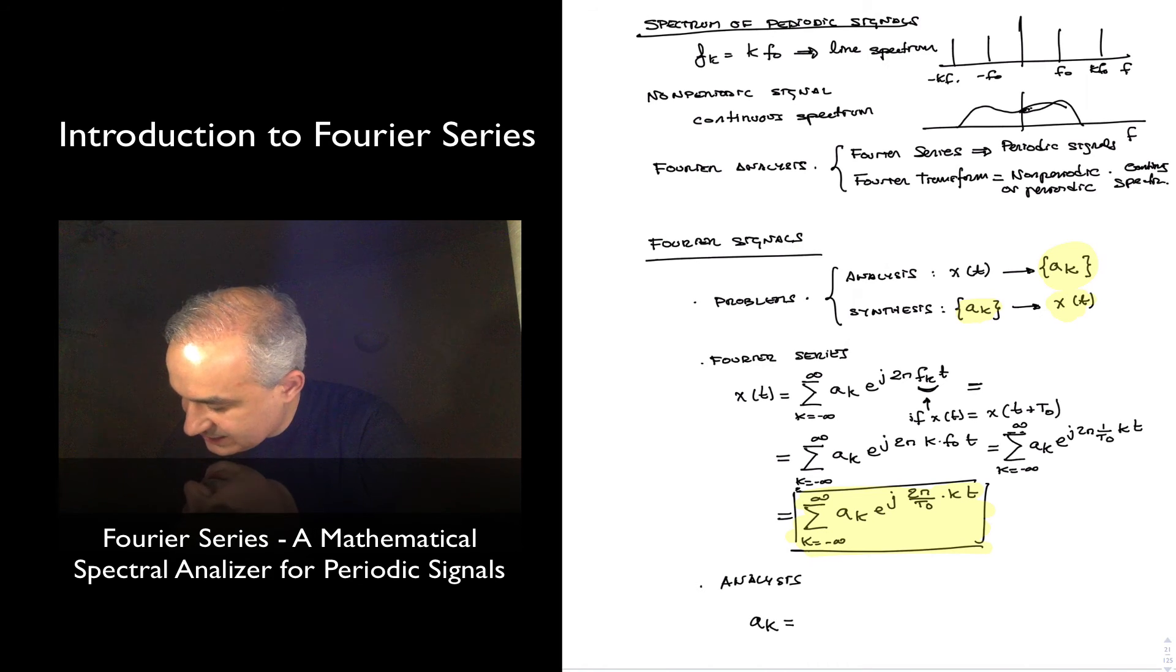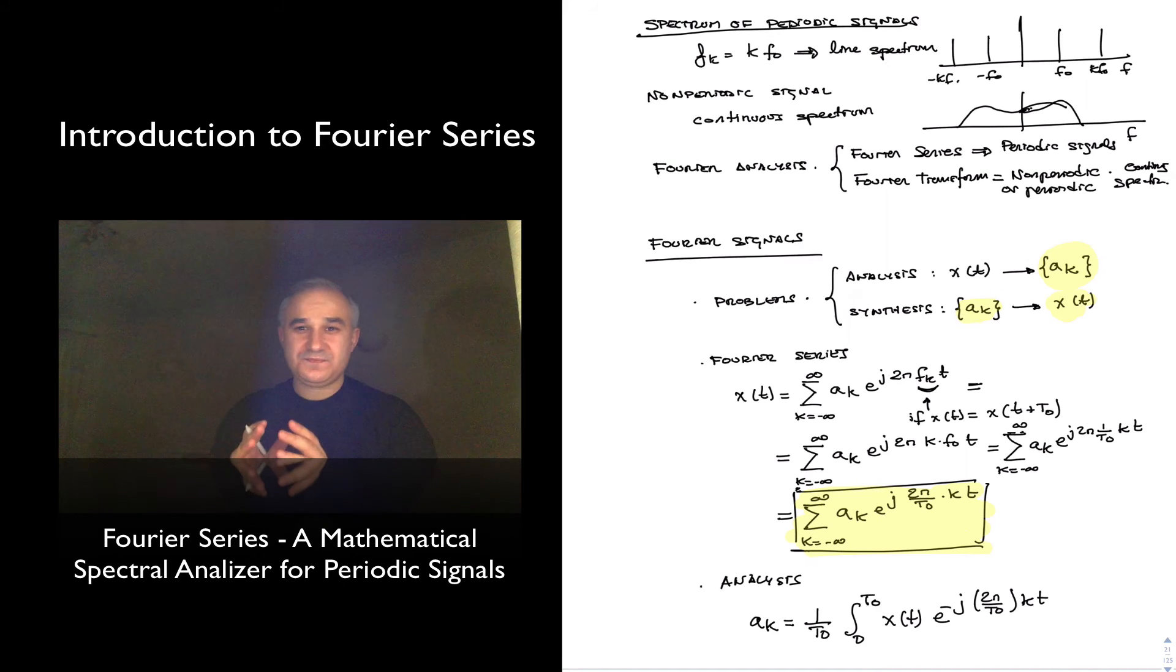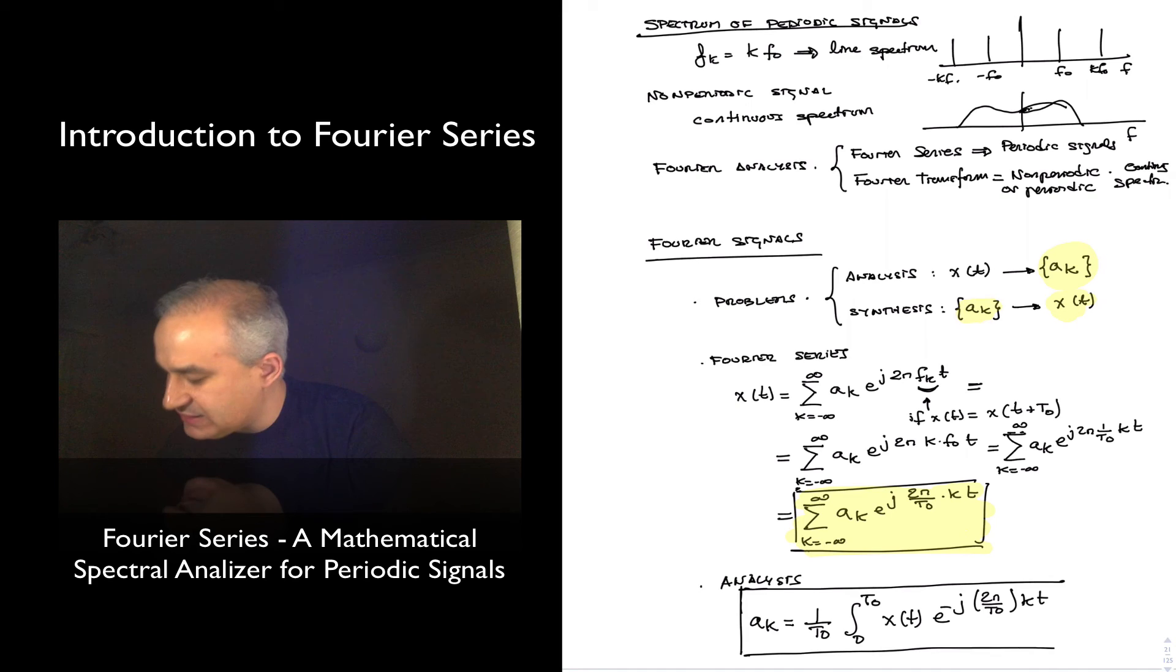A_k is given by 1 over t_0 integral from 0 to t_0 of x of t e to the minus j 2 pi over t_0 kt dt. This is really, you are going to see later on, it's just the Fourier transform, evaluated over one period, and plugging in instead of omega, plugging in the omega ks, the harmonically related frequencies. We will see that later on. And so eventually, for continuous time signals, we will just always use the Fourier transform eventually.